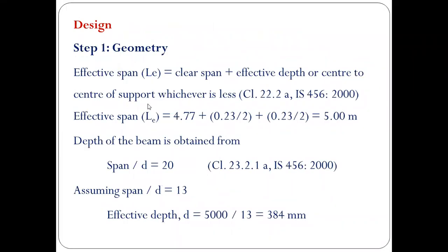Step 1: Geometry. In this step we are going to find out the effective span, effective cover, effective depth, overall depth, as well as the width of the beam. The effective span is the sum of clear span plus effective depth, or the center to center of support, whichever is less — taken from Clause 22.2(a) of the code. The effective span equals 4.77 plus 0.23/2 plus 0.23/2, which equals 5 meters.